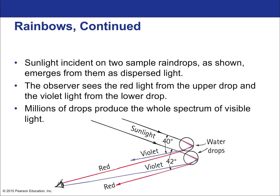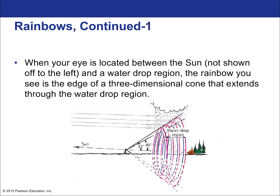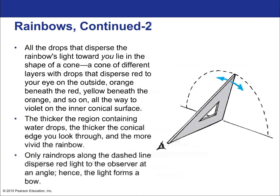The composite effect of light interacting with many many individual water droplets produces the arc of a rainbow — each droplet contributing to a different part of the spectrum seen by the observer, creating that banded arc of color.